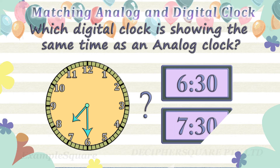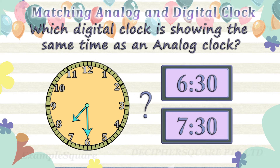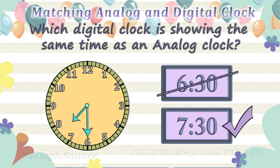Which digital clock is showing the same time as an analog clock? Time in analog clock is 7:30.